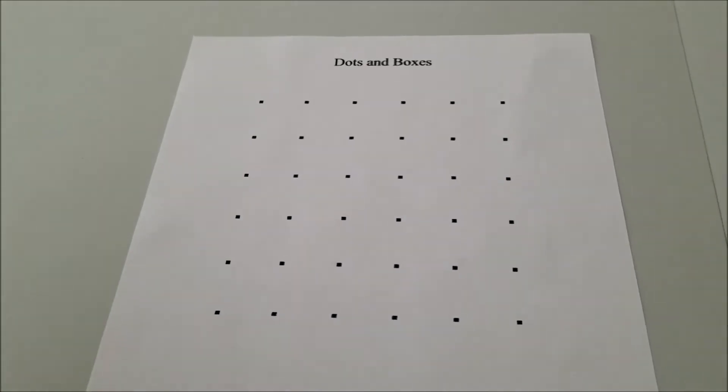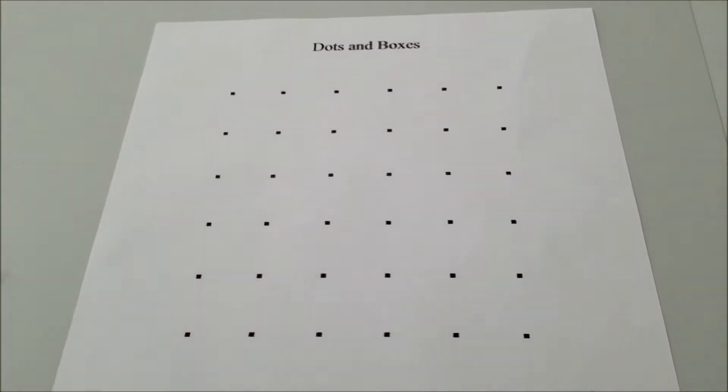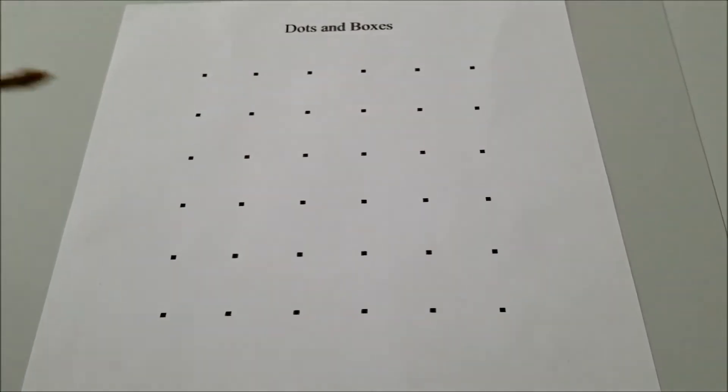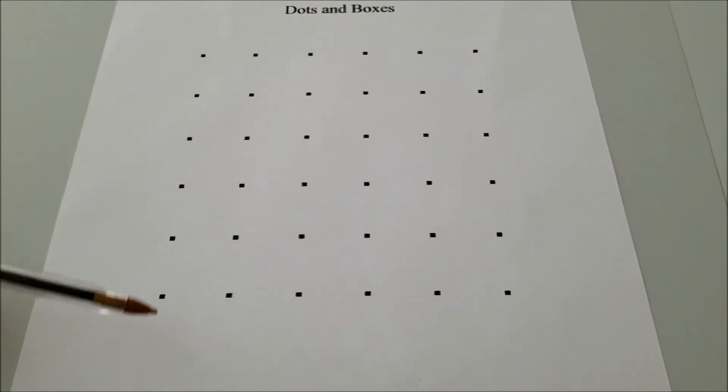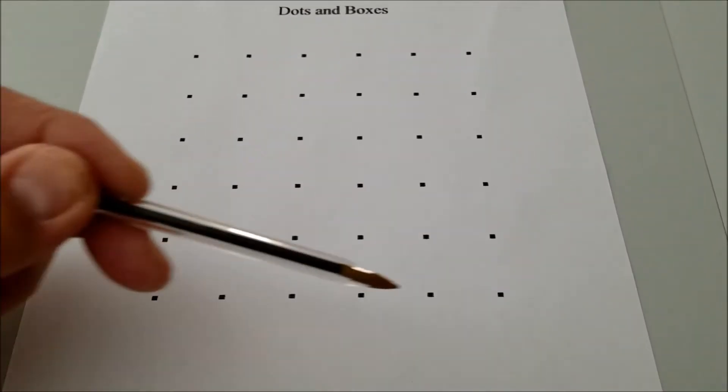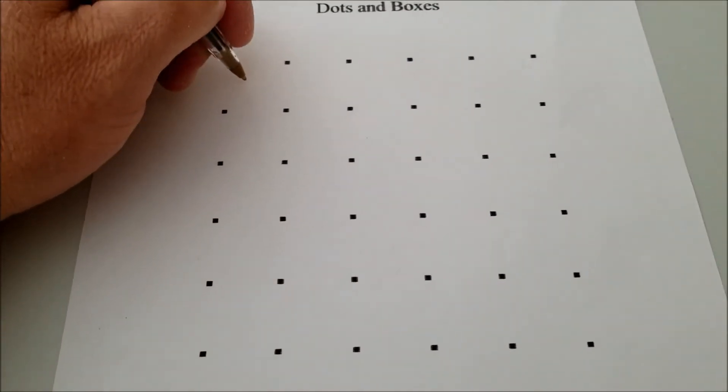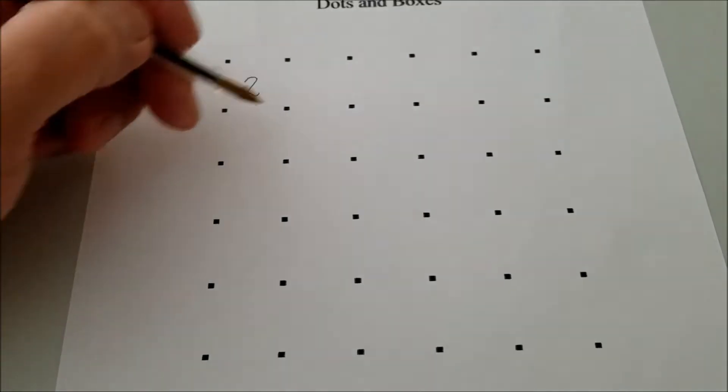So if you guys want the template for this paper, I'll give you a link in the description. Okay. If you didn't want to, you could just get a plain piece of paper and make these dots. It just goes one, two, three, four, five, six dots down and six dots across, but it's up to you. So what I would do now is first start putting some numbers where the boxes would be.